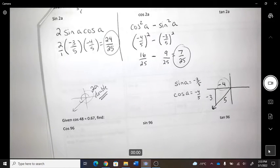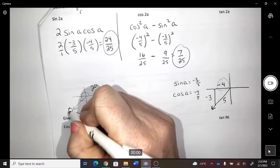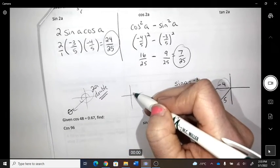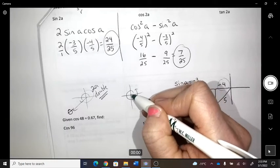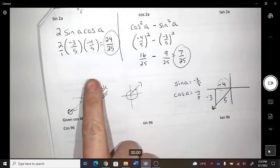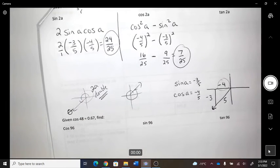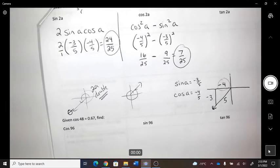So then this ends up being 7 over 25. So I do know that whatever this angle was, when I doubled it, it will be in quadrant 1. Because the sine is positive of it, and the cos is positive. So it has to be in quadrant 1.